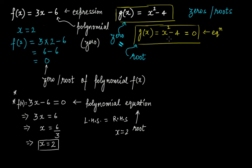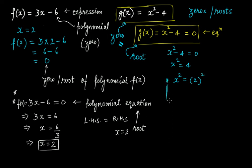Whenever you try to find out the zero, you first equate the polynomial to 0 and then find the value. Here, x squared minus 4 equal to 0 gives x squared equal to 4, which means x squared equal to 2 squared, or x squared equal to minus 2 whole squared, since both give 4. This will become even clearer as you solve quadratic equations, cubic equations, and equations of higher degrees.